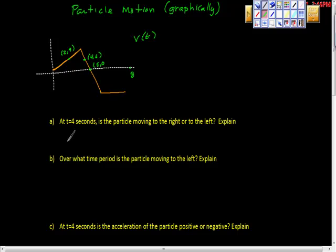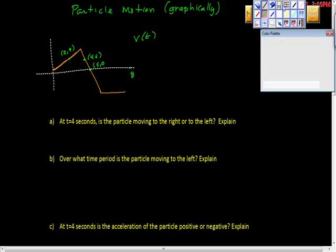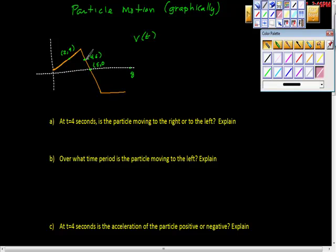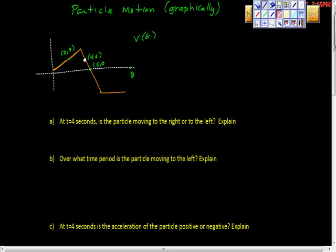The first question, part A: at t equals four seconds, is the particle moving to the right or to the left? Here is t equals four, right here, and we can see clearly that the particle is moving to the right because the velocity is positive. The particle is moving to the right.